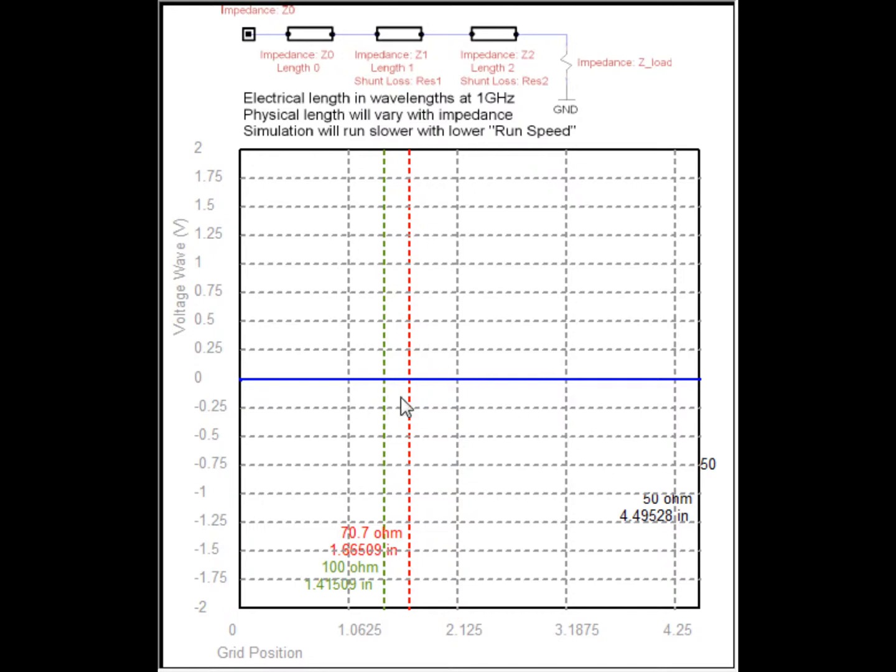And I've also made the second transmission line, the 70.7 ohm transmission line, a quarter wavelength at one gigahertz, which has sort of an interesting property.